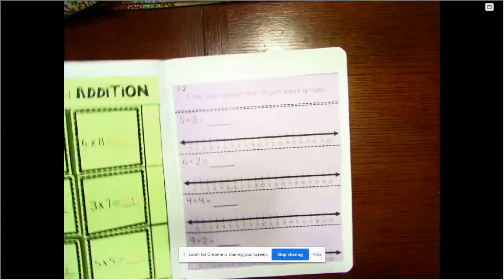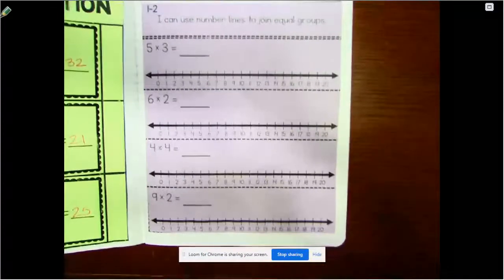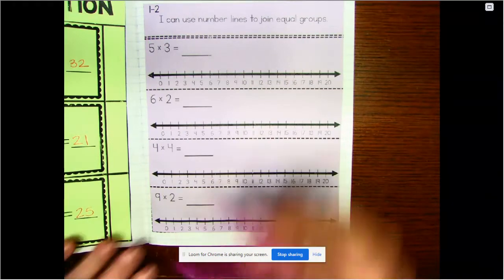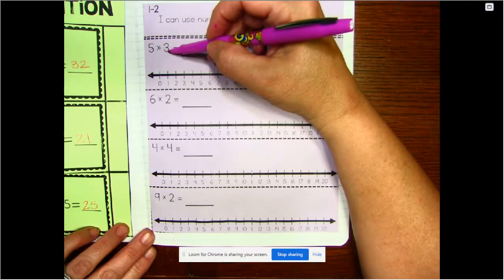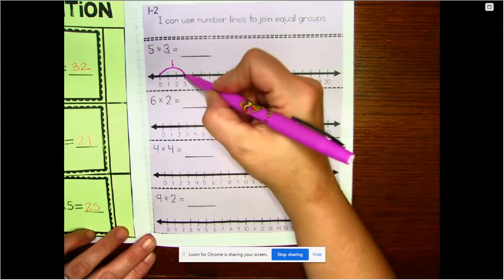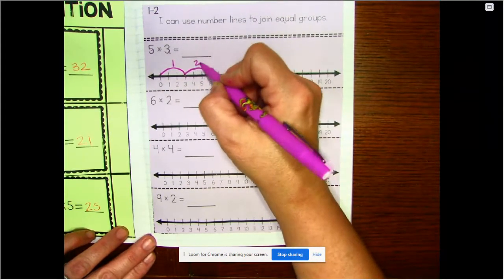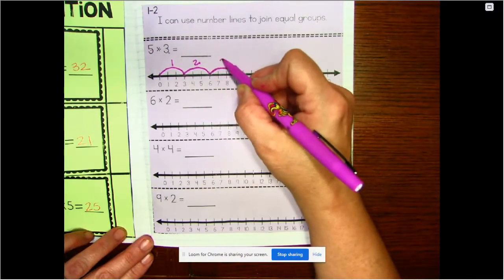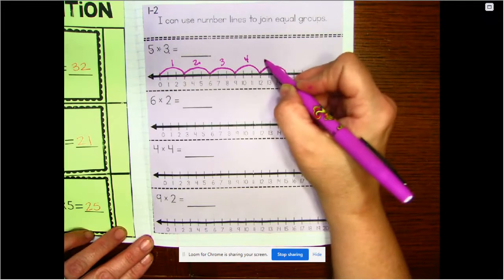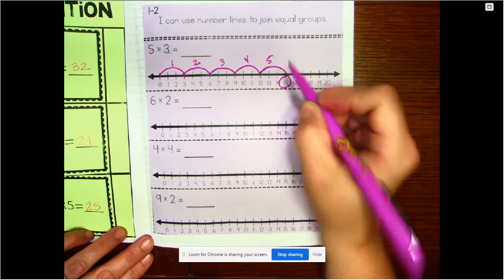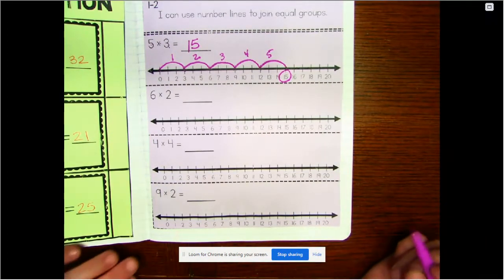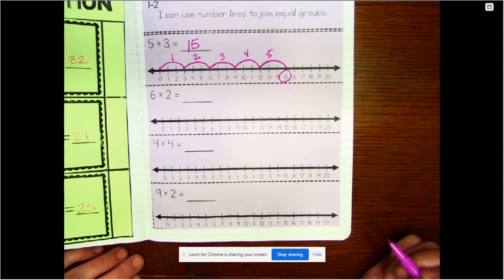All right. It says, I can use the number line to join equal groups. You can use the number line to join equal groups. So we're going to be doing jumps again. We're going to be doing five groups of three. Five jumps size of three. So, there's one jump. We're going to be doing six. There's two jumps. One, two, three. There's three jumps. One, two, three. There's four jumps. There's five jumps. And we land on 15. Okay. If you need some time, pause the video and then come back when you're ready.